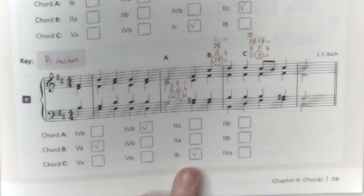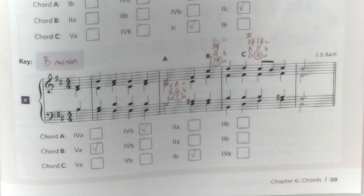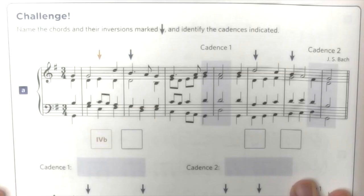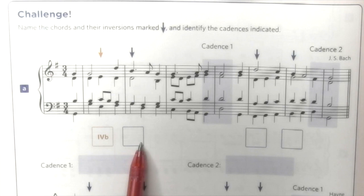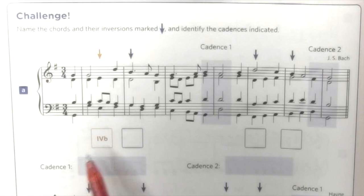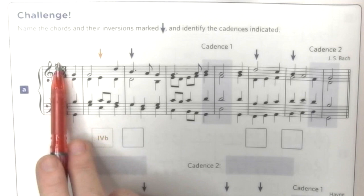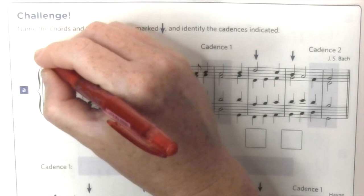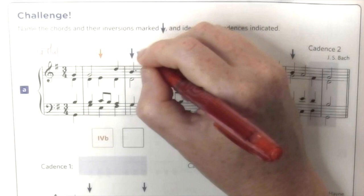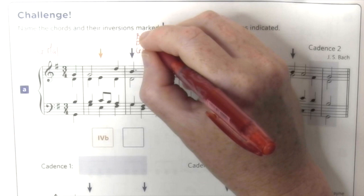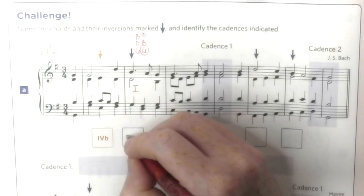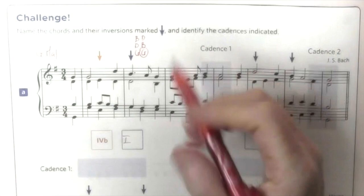There is one final challenge — naming the chords and their inversions in this amazing piece by Bach. The key is G major: one sharp, and we have G major chords. The first chord is already done. Second chord: G, D, B — Sol, La, Si, Do, Re. G, B, D. G is the first. At the bottom is G, so it's 1A.